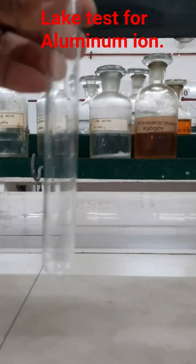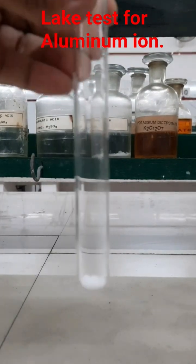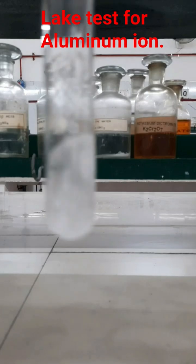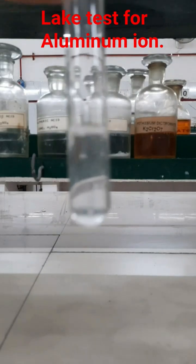Let us perform a lake test for the presence of Al3+ ion. First of all, I have taken a pinch of salt in a test tube, and then I am going to add distilled water to prepare an aqueous solution of the salt.